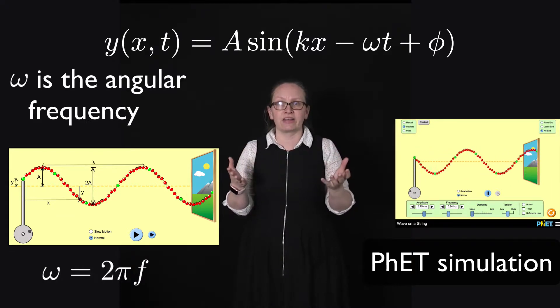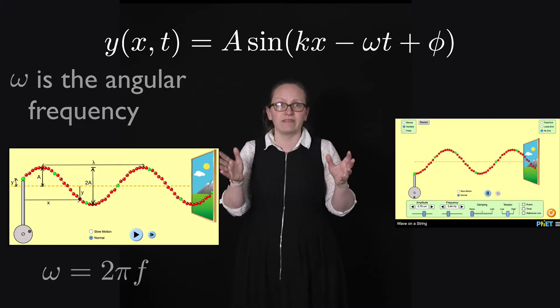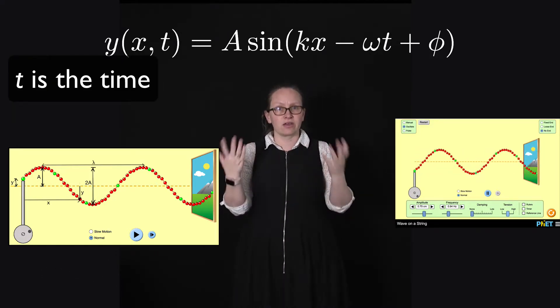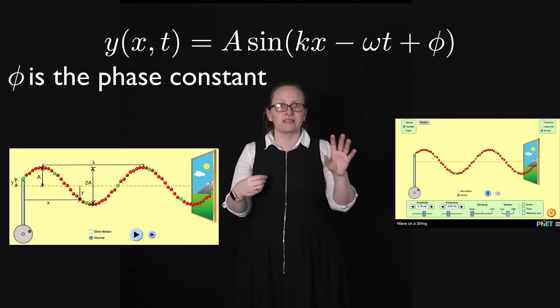omega, this is the angular frequency. So once again, it's given by 2 pi times the frequency, 2 pi f. t, this is the time, measured in seconds. And phi, this is the phase constant.